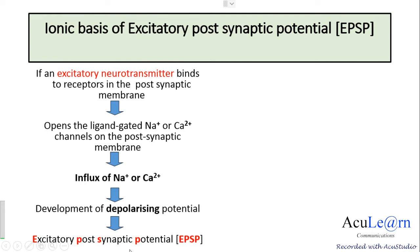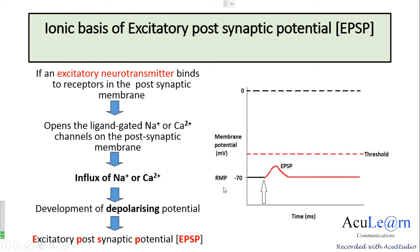This depolarizing potential is called the excitatory post-synaptic potential, and it occurs in the post-synaptic membrane. As you can see in the figure, starting from the resting membrane potential of the post-synaptic neuron, the influx of sodium or calcium ions causes a brief depolarization — the membrane potential becomes less negative — followed by a slower decline back to the resting state. The depolarization starts with a latency, reaches a peak, then declines. This is the excitatory post-synaptic potential. The most common excitatory neurotransmitter within the central nervous system is glutamate.